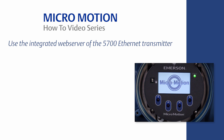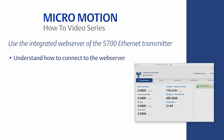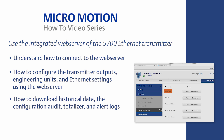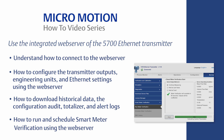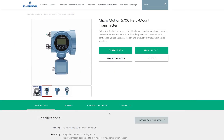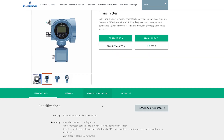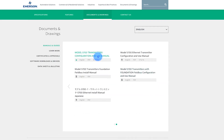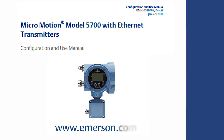The learning objectives for this video are: how to connect to the web server; how to configure the transmitter outputs, engineering units, and Ethernet settings using the web server; how to download historical data, the configuration audit, totalizer, and alert logs; and how to run and schedule Smart Meter Verification using the web server. For the complete set of configuration instructions, please refer to the appropriate MicroMotion transmitter configuration and use manual located on the Emerson website.